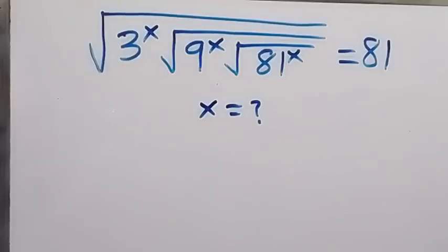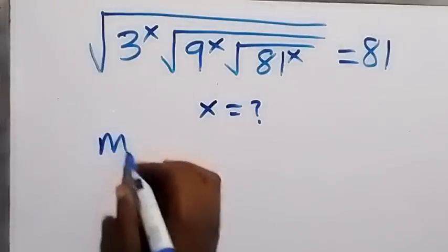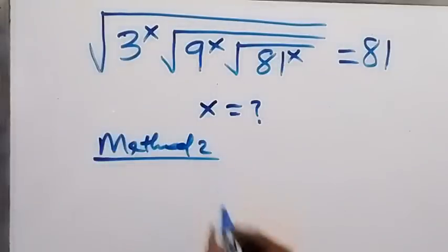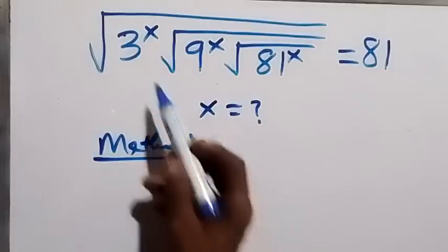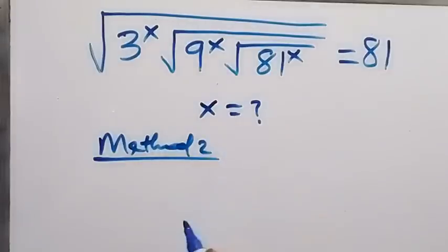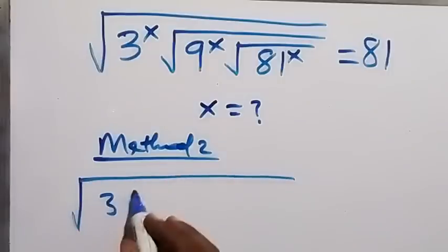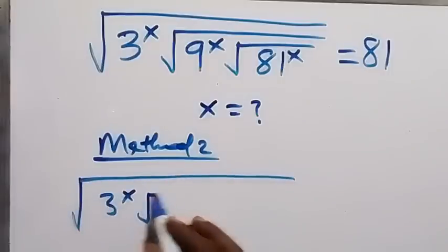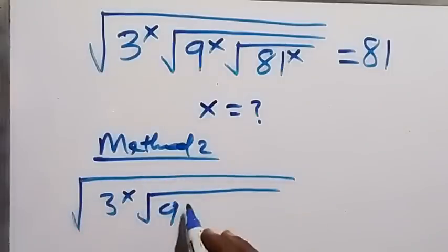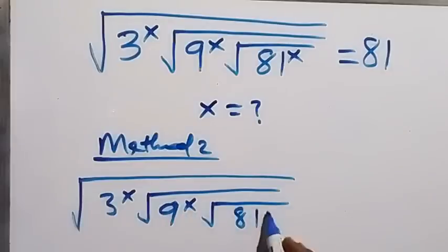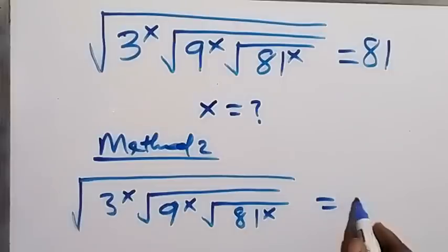Now let's use Method 2. We are given: square root of 3 raised to power x, then square root of 9 raised to power x, also inside that square root of 81 raised to power x, which equals 81.